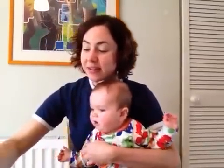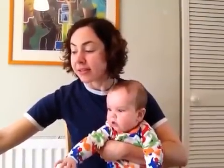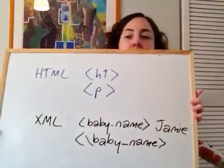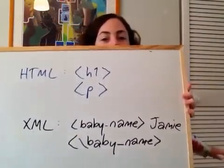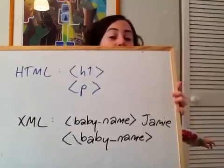For example, you could create an entire tag called 'baby name', and then say that the baby name is Jamie, because that is the baby name, and then close it — because we always close our tags. And as long as you've told the browser how to interpret what to do when it sees the tag 'baby name', it's going to be fine.